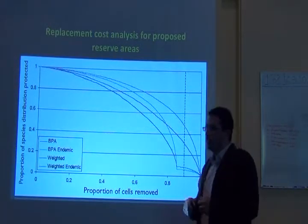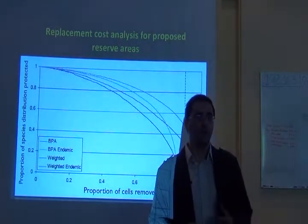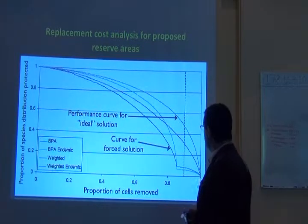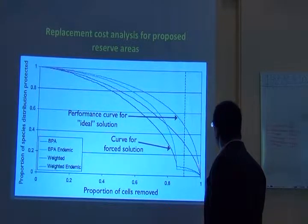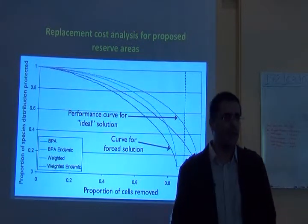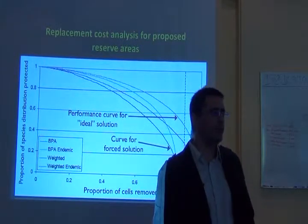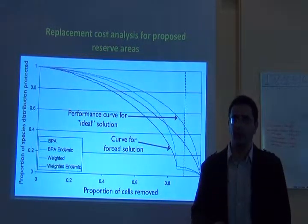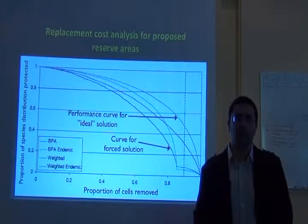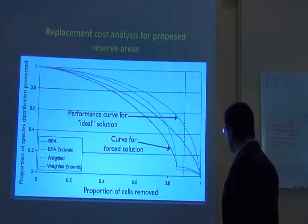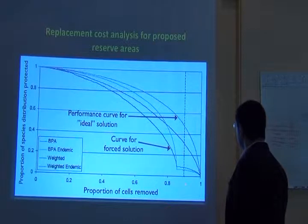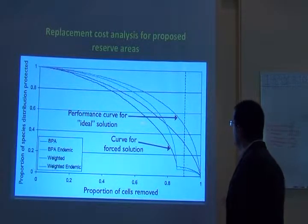You can also look at these curves to see the effect of including costs in your analysis. This is very interesting because the curves are so different. Here you have a performance curve for a kind of ideal — or naive — solution where you're only looking at biodiversity, not considering any other aspect of planning, just maximizing the proportion of biodiversity protected. If you do not include any costs, at the 10% mark you can have about 50% of species distribution protected on average.